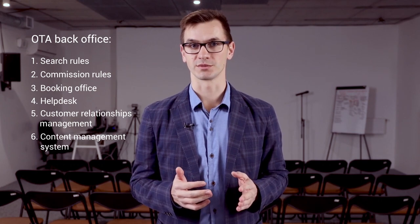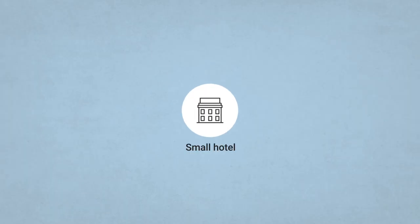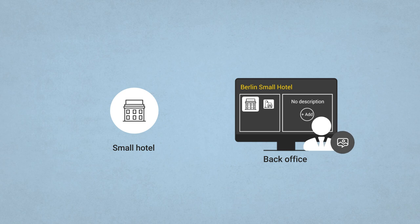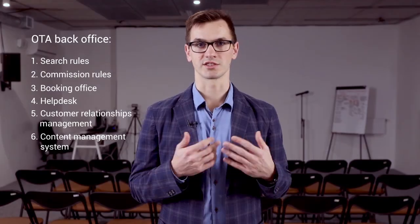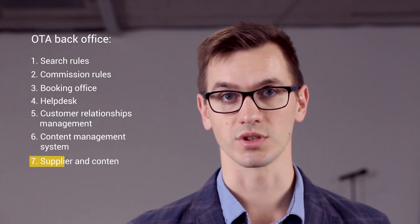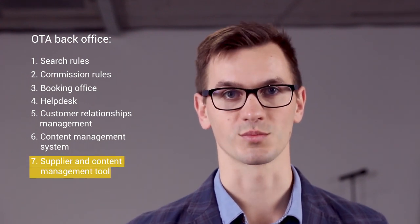Another optional thing, but still critical for some travel businesses. Some OTAs may work with small suppliers that don't have their APIs or other interfaces to send data. It means that such an OTA may have people responsible for adding this supplier content to the platform. They upload images, add descriptions, set prices, configure packages, and so on. In this case, a booking office would have a supplier and content management tool.